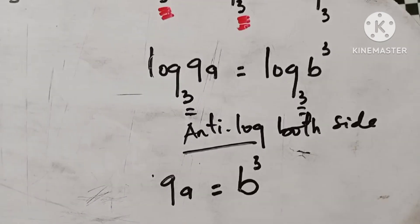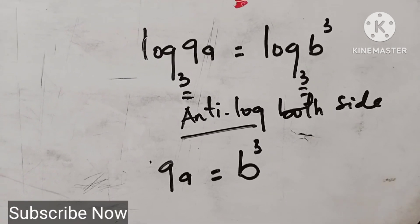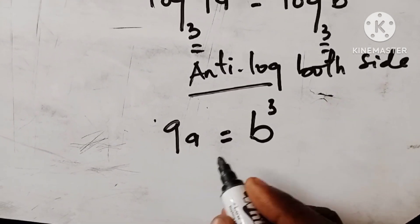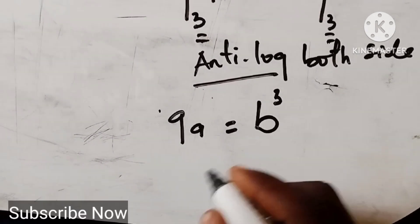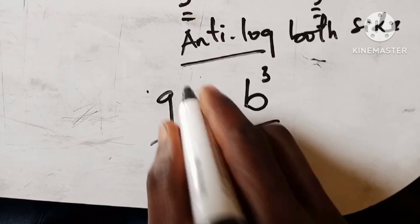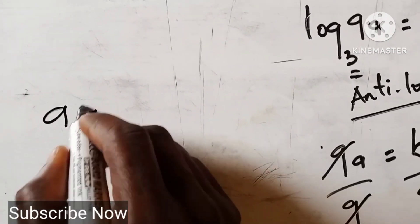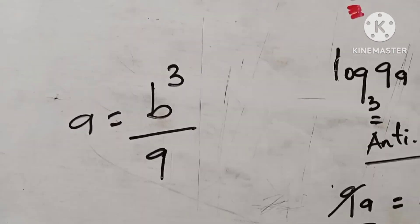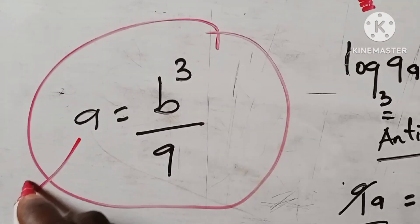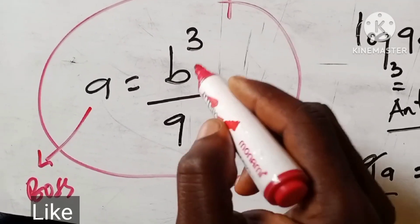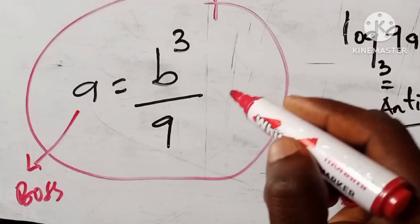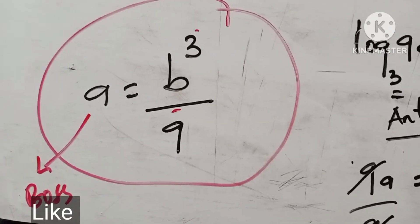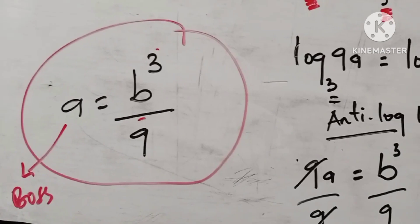Comment in the comment section below if you want more logarithm questions. From 9a equals B³, we divide both sides by 9, so a equals B³ over 9. That is our final answer — a is the boss and is expressed entirely in terms of B, which means B is the employee. This is exactly what the question was asking us to find, step by step.